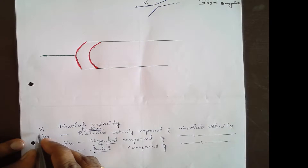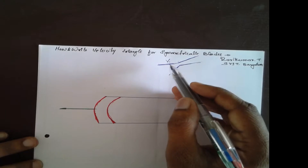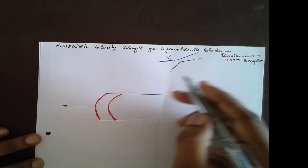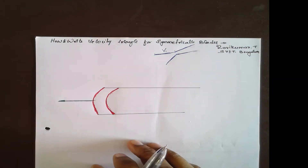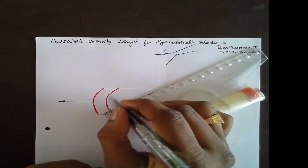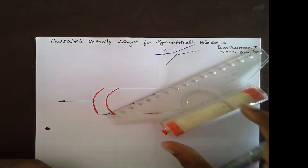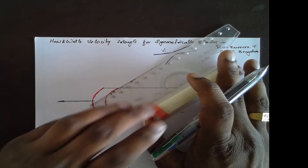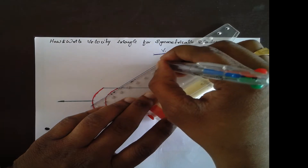v1 is the absolute velocity coming out of the nozzle. It always hits the tip of the blade. So we draw an inclined line from the nozzle up to the tip of the blade, and take a tangent to the blade at that point — this is your v1.